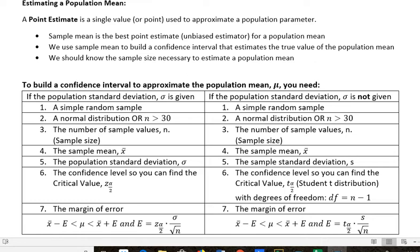A point estimate is a single value or point used to approximate a population parameter. The parameter could be a proportion, could be a mean, could be standard deviation. You want to use unbiased estimators to do this, and the sample mean is the best point estimate for a population mean because it's an unbiased estimator.